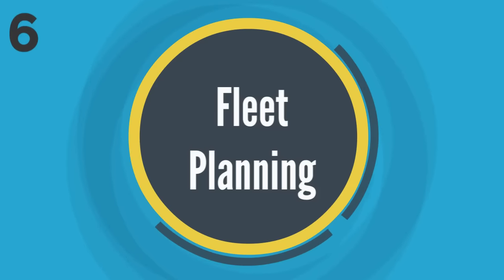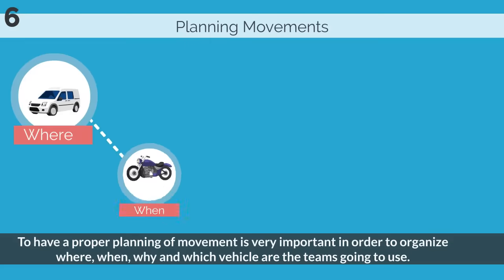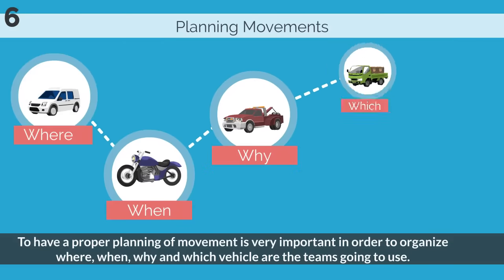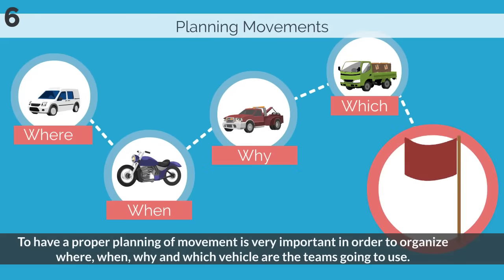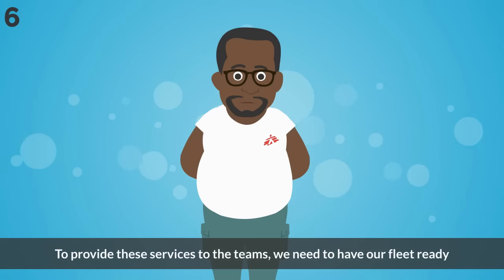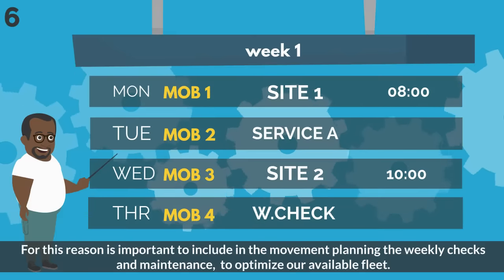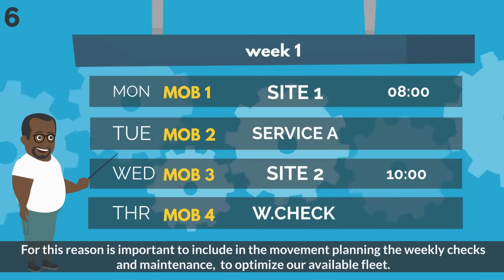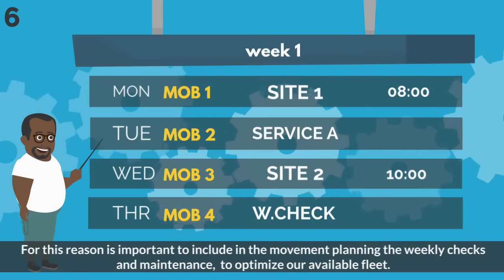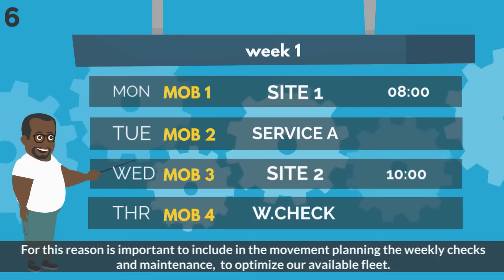Six: Fleet planning. To have a proper planning of movement is very important in order to organize where, when, why, and which vehicle the teams are going to use. To provide these services to the teams, we need to have our fleet ready. For this reason, it is important to include in the movement planning the weekly checks and maintenance, to optimize our available fleet.